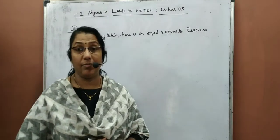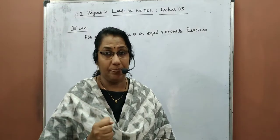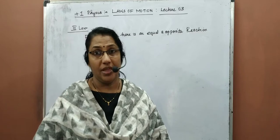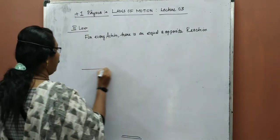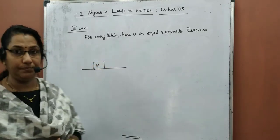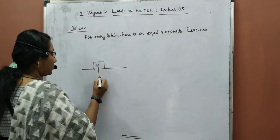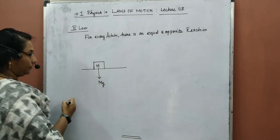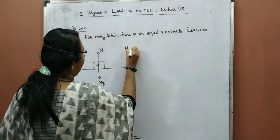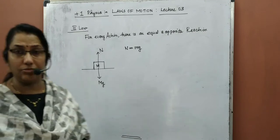But even though we know the statement very well, we want to know the concept behind this statement. What is the concept, what is the statement actually telling us. Suppose I am giving you an example: a block of mass M is kept on the surface of a table or a horizontal surface.